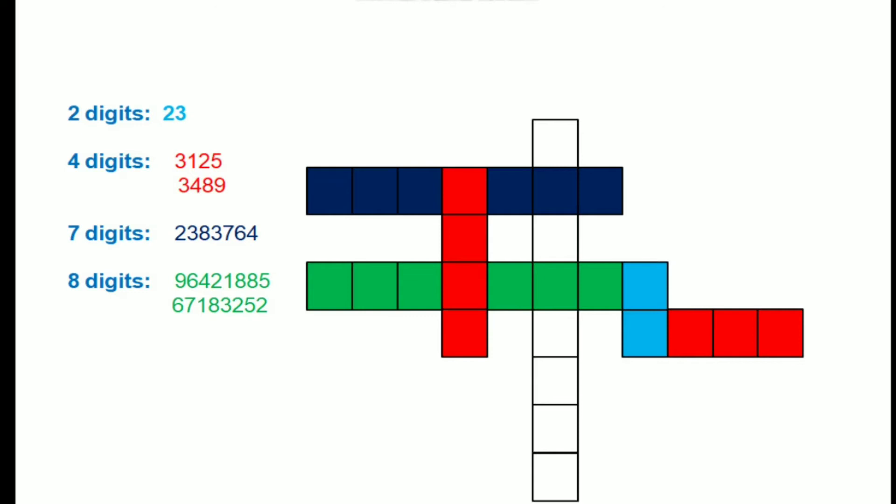So as you have written 23 in these boxes, now next we have to write four digit numbers. As you can see, the red color boxes are there and we are going to write these two four digit numbers. Two numbers are there and both numbers are starting with 3. So which number to write where? 3125 will go in the horizontal boxes, whereas 3489 will go in the vertical boxes.